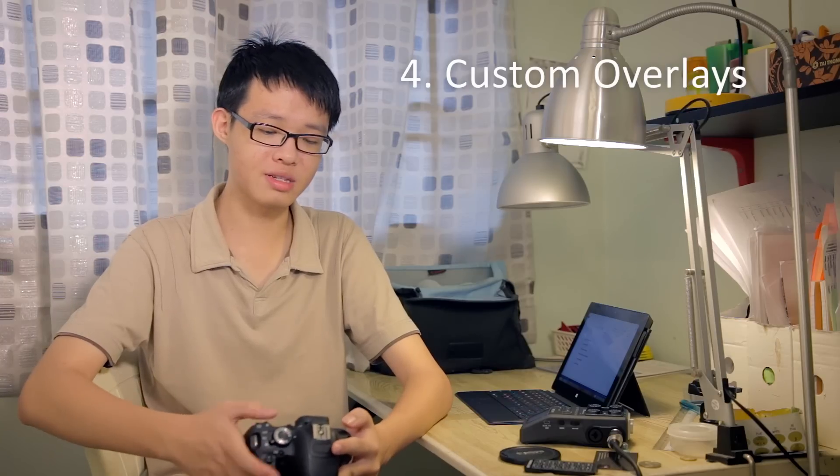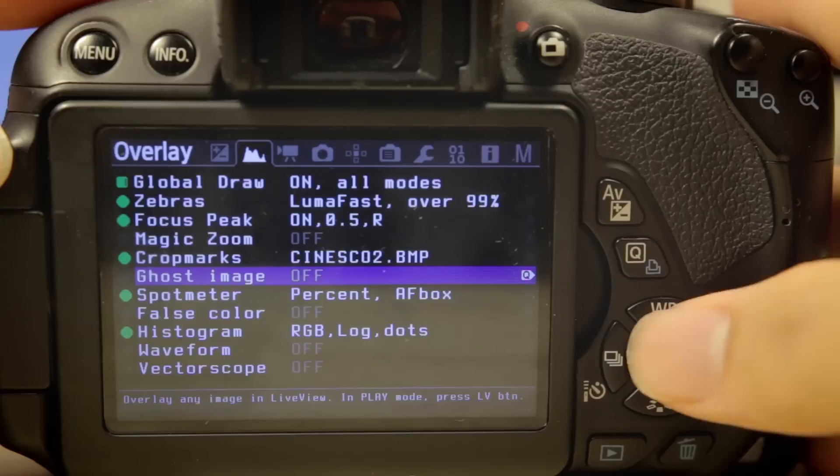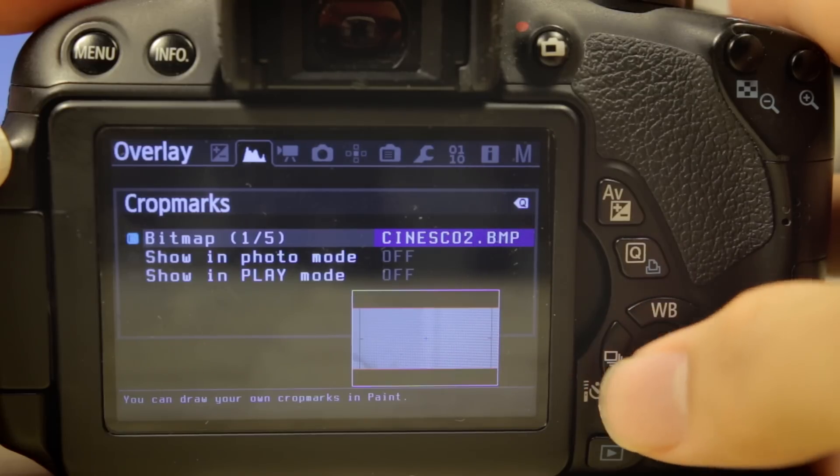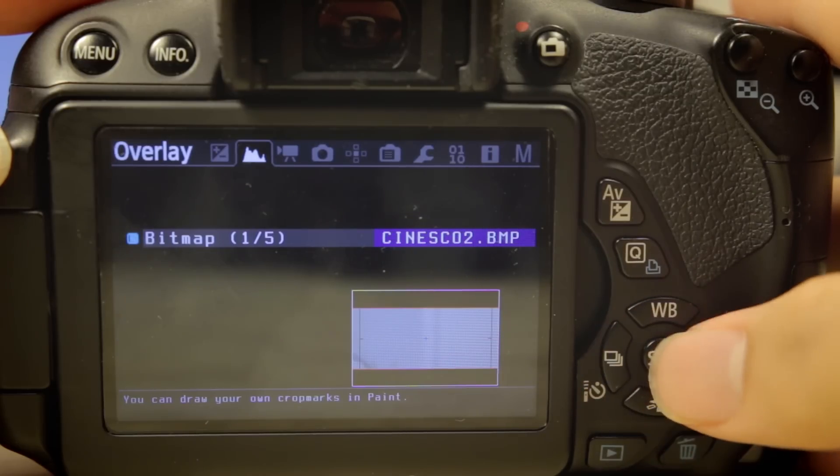At number four, we have Custom Overlays. Magic Lantern has a lot of Custom Overlays for you, including the anamorphic letterbox overlays, which can be a huge lifesaver when you are framing because with our Canon DSLRs, all the overlays are fixed at 16 to 9 in video mode. So with the Custom Overlays, it can really help you when you are trying to frame a shot that you're going to crop later in post-production.